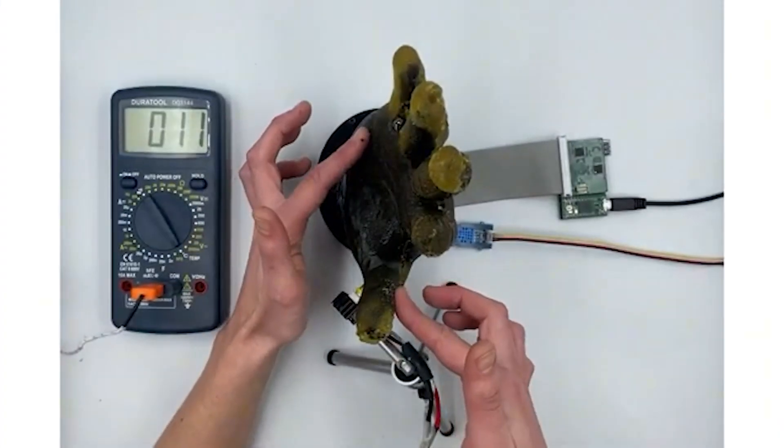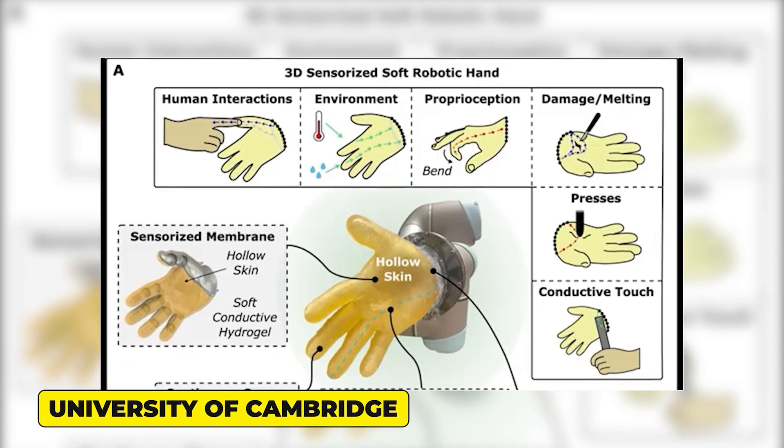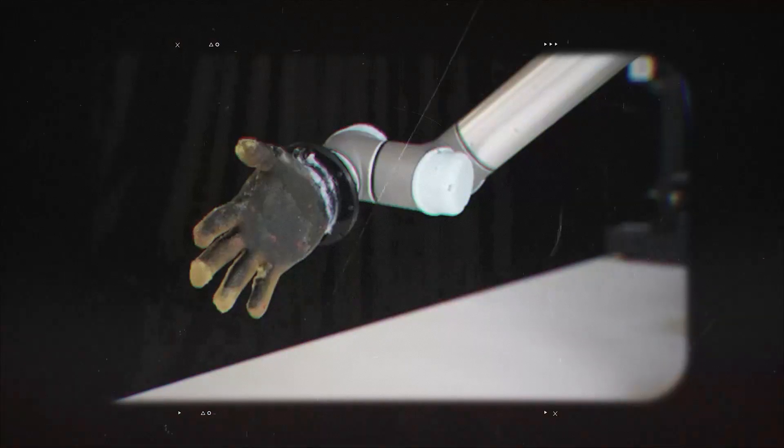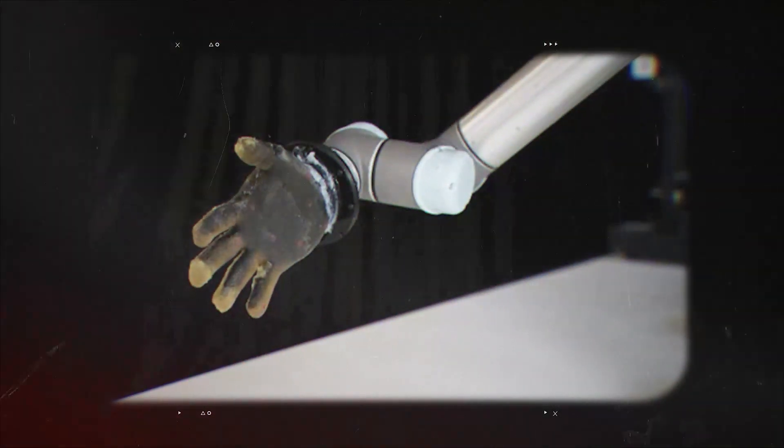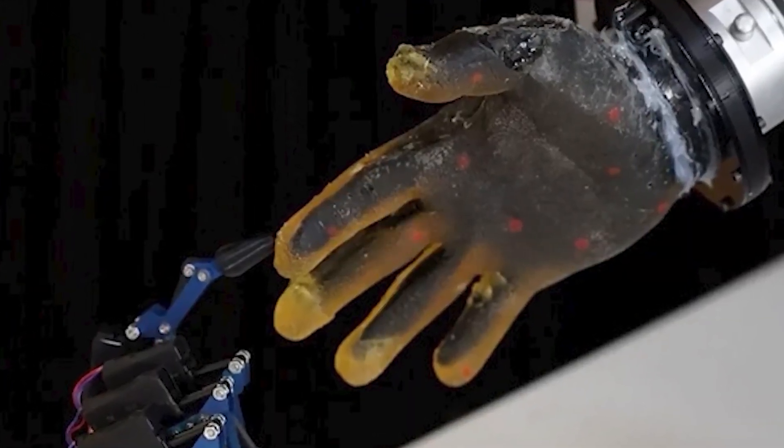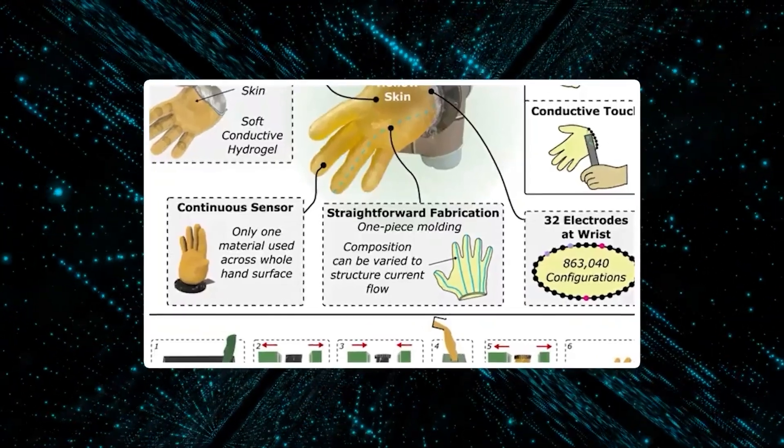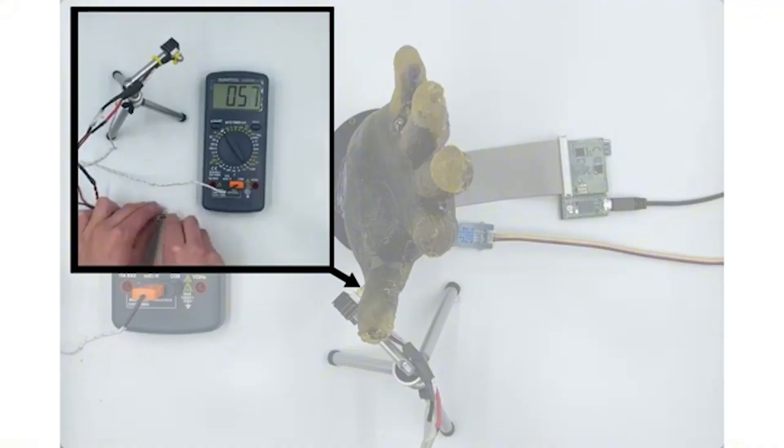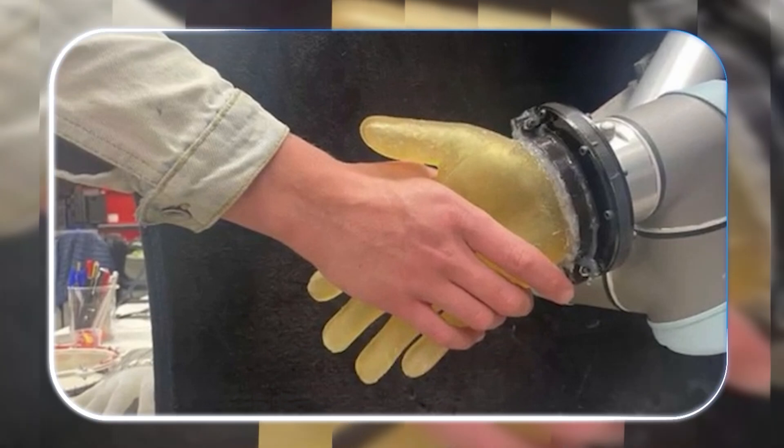Get ready for robots that don't just move, they feel. Researchers at the University of Cambridge just cracked the code on robotic skin, creating a hydrogel membrane packed with 863,000 sensory pathways. This isn't your typical sensor array. It's a single, flexible layer that detects pressure, heat, and even damage, just like human skin. Dr. David Hardman, the lead scientist behind the project, explains, We wanted one material that could sense multiple types of touch simultaneously. No complex wiring. No bulky hardware.